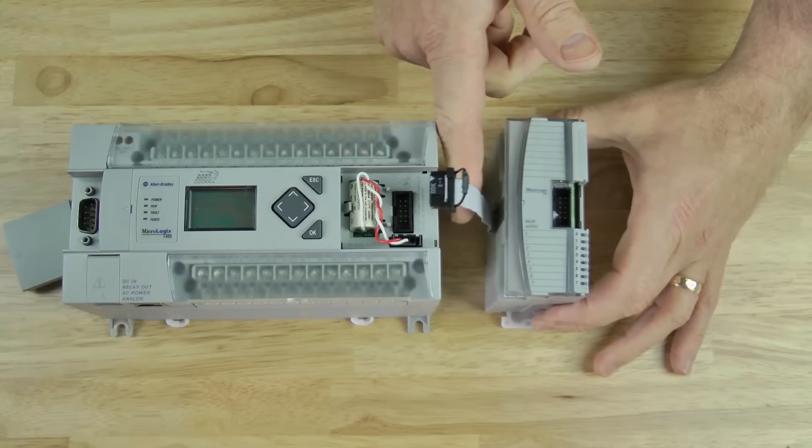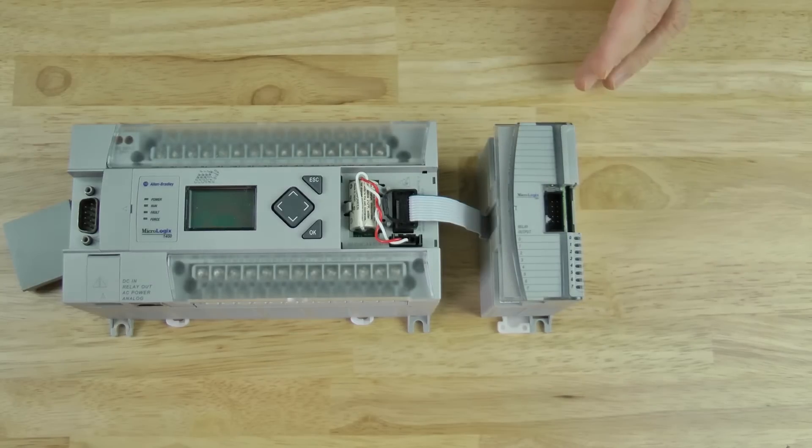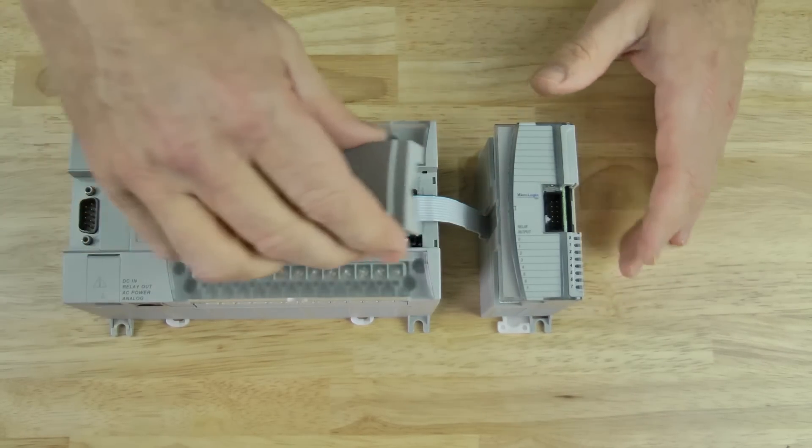First make sure power is off, then simply plug the cable from the expansion module into the expansion I.O. connector on the 1400's base and replace the cover.